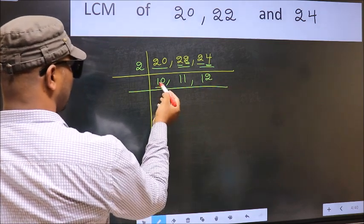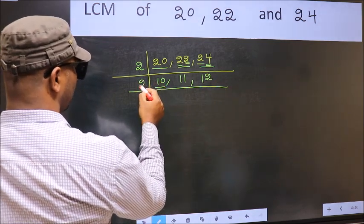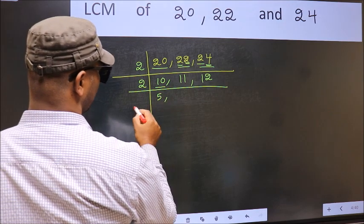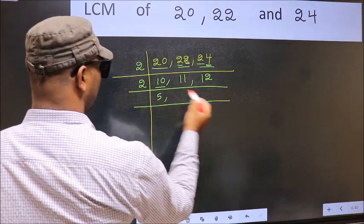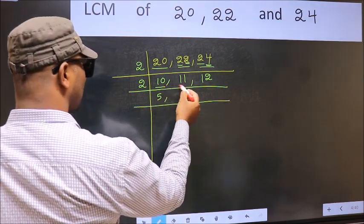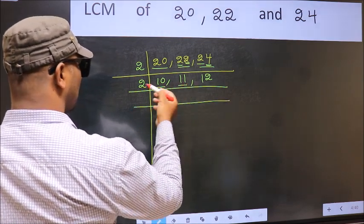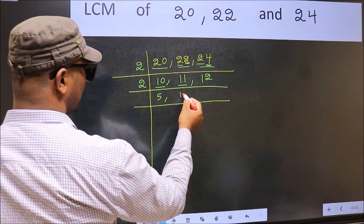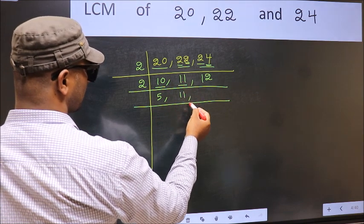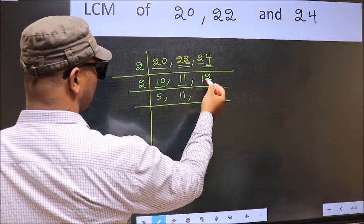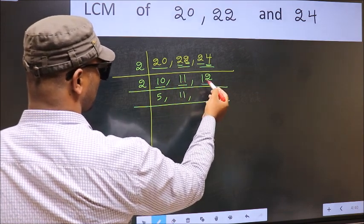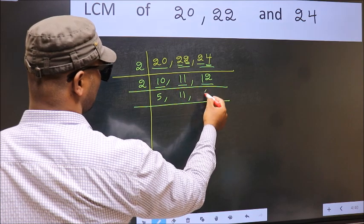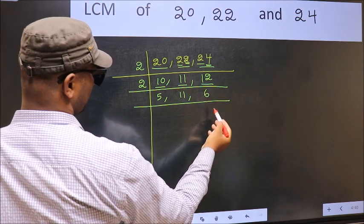Now here we have 10. 10 is 2 fives is 10. The other number 11 — not divisible by 2, so you write it down as it is. The other number 12: when do we get 12 in the 2 table? 2 sixes is 12.